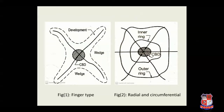You can see figure one, which is finger type urban form, and figure two, which is radial and circumferential type urban form. In the finger type urban form, the figure denotes the formation of a major traffic corridor radially from the CBD, with intense development along this corridor, and the wedge areas between the radial corridors get filled gradually.